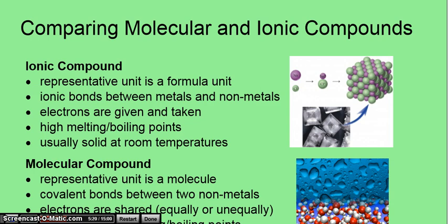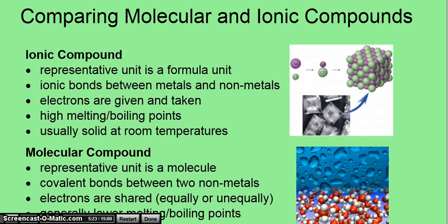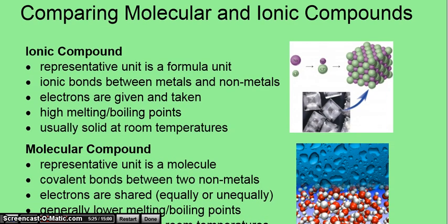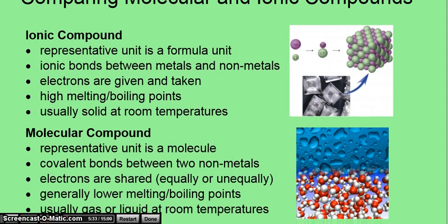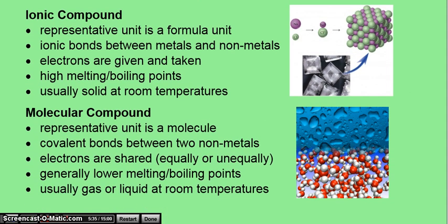Now when we look at the properties of molecular and ionic compounds, the attractions between them can help account for the different properties we see. So remember that ionic we said is a formula unit. We can't refer to it as a molecule because it doesn't exist in those discrete particles.